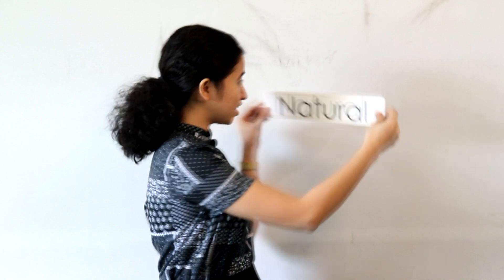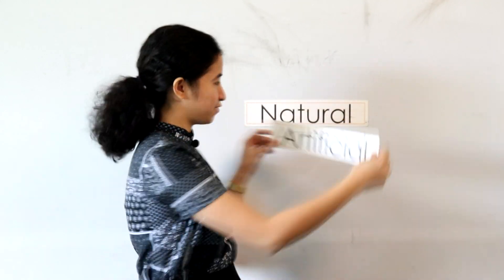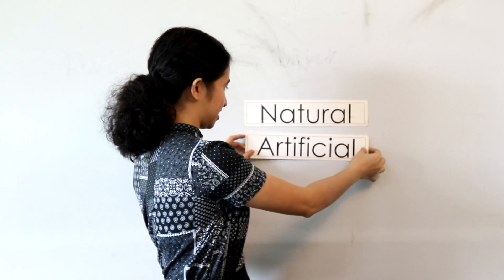Our lesson for today is about the two kinds of light: the natural light and the artificial light.